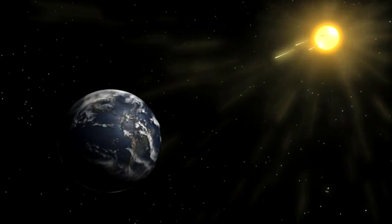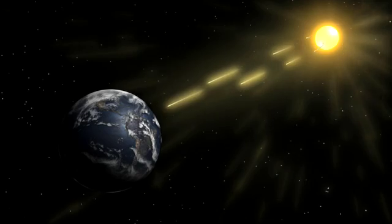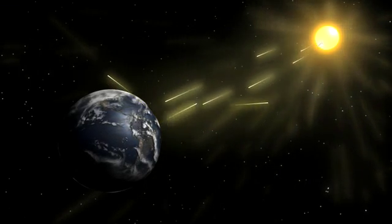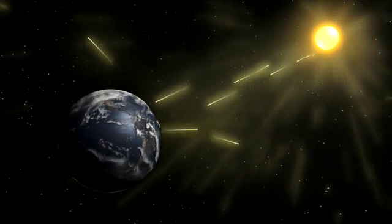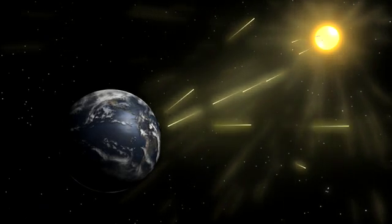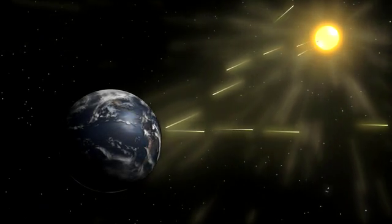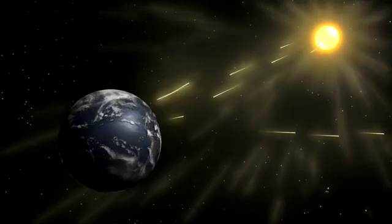A second piece of the temperature puzzle is our planet's brightness. All other things being equal, a brighter, more reflective planet bounces more energy back to space. Some of the brightest, most reflective areas of our planet are those covered with ice.